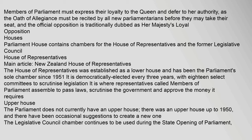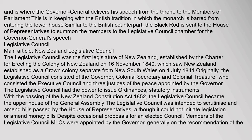Houses: Parliament House contains chambers for the House of Representatives and the former Legislative Council. The House of Representatives was established as a lower house and has been the parliament's sole chamber since 1951. It is democratically elected every three years, with 18 select committees to scrutinize legislation. It is where representatives called members of parliament assemble to pass laws, scrutinize the government and approve the money. The parliament does not currently have an upper house — there was an upper house up to 1950, and there have been occasional suggestions to create a new one. The Legislative Council Chamber continues to be used during the state opening of parliament, and as where the Governor-General delivers his speech from the throne. The black rod is sent to the House of Representatives to summon the members to the Legislative Council Chamber for the Governor-General's Speech.